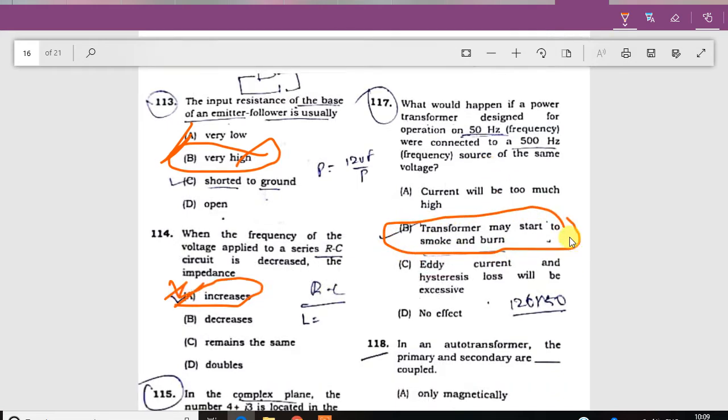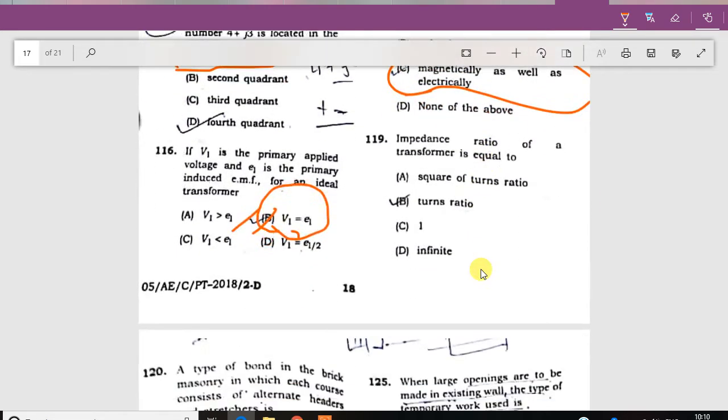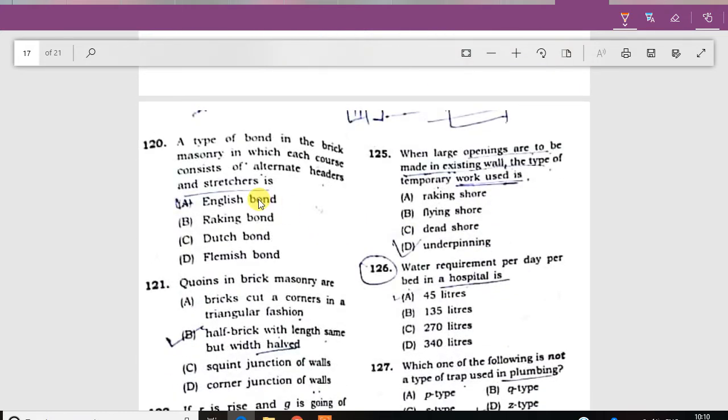In an autotransformer, the primary and secondary are coupled magnetically as well as electrically. The transformer impedance is equal to the square of the turns ratio.